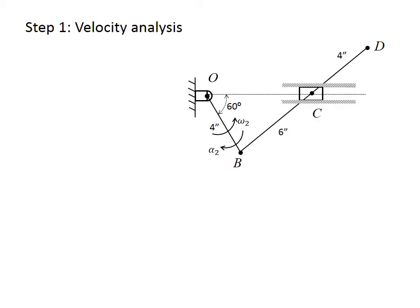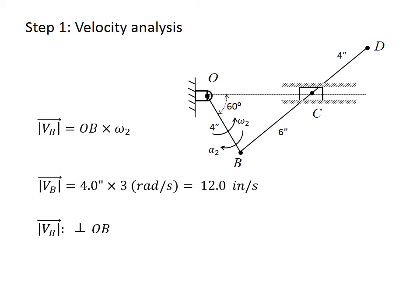The first step to determine the acceleration is to find the velocity of the different points. For this reason, we use velocity analysis using the relative velocity and velocity polygon method. We know that the velocity of point B is equal to the crank size OB times the angular velocity of the crank. The magnitude of this vector is 12 inches per second, and since the crank is rotating counterclockwise, the velocity is perpendicular to OB in the direction of the angular velocity.